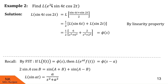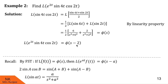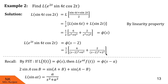Now, Laplace of e raised to 2t into sin 4t cos 2t equals phi of s minus 2, since a = 2. Replacing every s in phi of s by s minus 2, the answer is 1/2 times [6 upon (s minus 2) squared plus 36 plus 2 upon (s minus 2) squared plus 4].